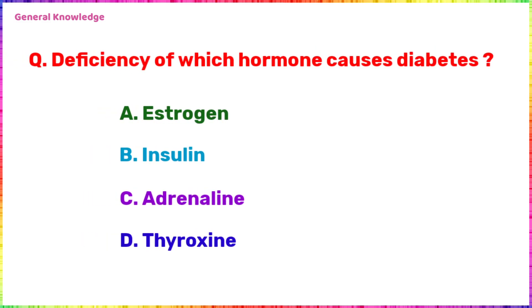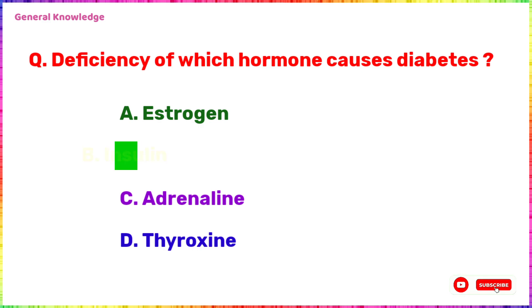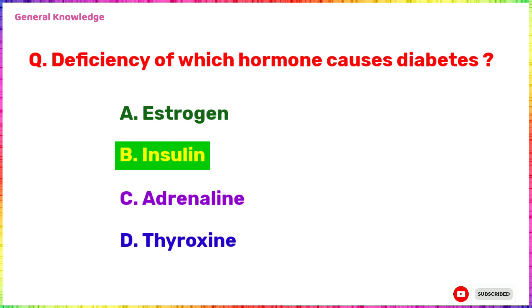Deficiency of which hormone causes diabetes? The correct answer is option B, insulin.